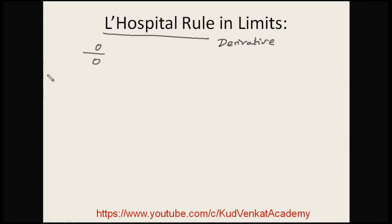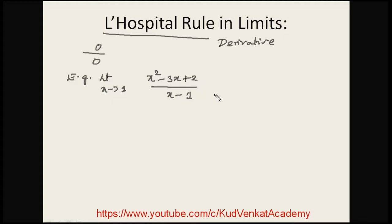Let us understand this by considering one simple example: limit x tends to 1 of (x² - 3x + 2) divided by (x - 1). If we substitute x = 1, the limit becomes 0/0. So in order to find this value, let us apply L'Hôpital's Rule — we take the derivative of the given function.